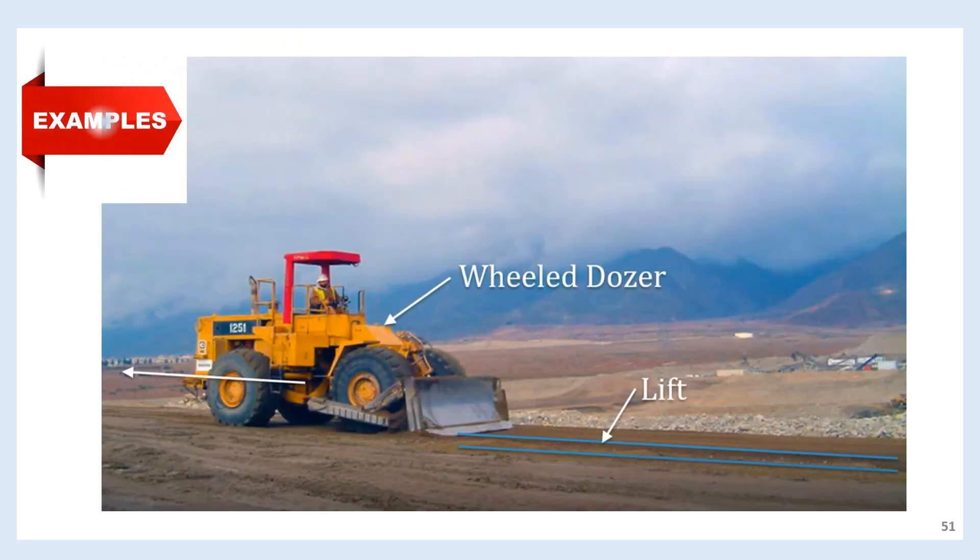Situation 4: Here you see a dozer smoothing out the soil dumped by the dump truck. In the image the dozer is actually moving from right to left, dragging the soil on the back side of its blade. The dozer leaves behind a relatively smooth layer of soil called a lift. It's called a lift because it lifts or raises the surface of the fill. The thickness of a lift is typically 8 to 12 inches or 20 to 30 centimeters.